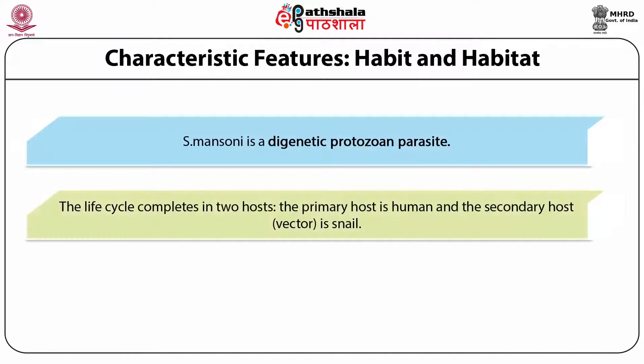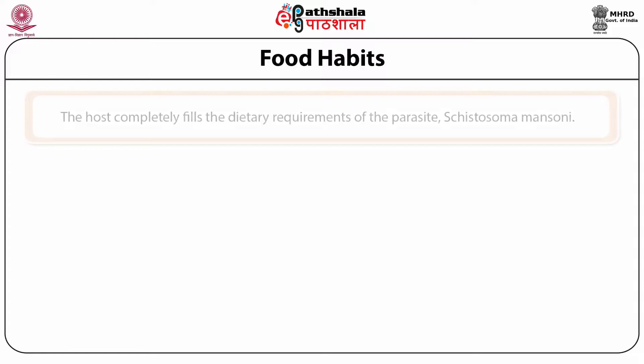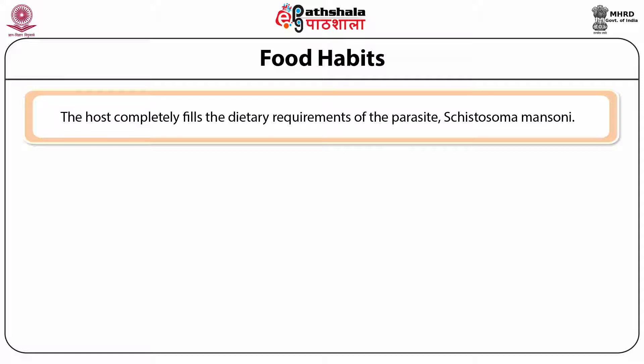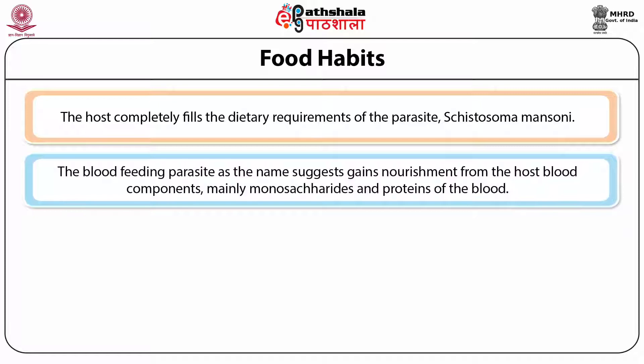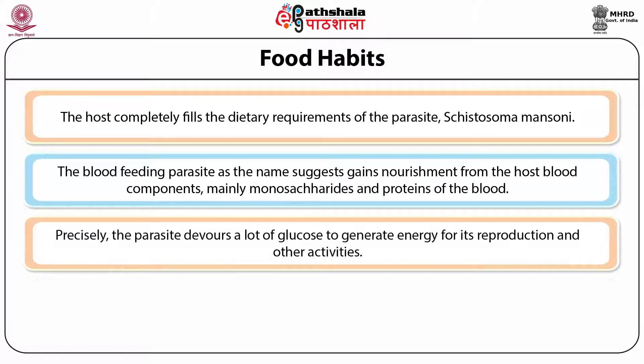Characteristic features — habit and habitat of Cystosoma mansoni: Cystosoma mansoni is a digenetic protozoan parasite. The life cycle completes in two hosts. The primary host is human and the secondary host vector is snail. The host completely fills the dietary requirements of the parasite. Cystosoma mansoni, the blood feeding parasite, gains nourishment from the host blood components, mainly monosaccharides and proteins of the blood.